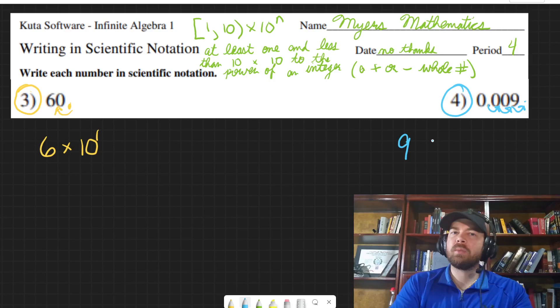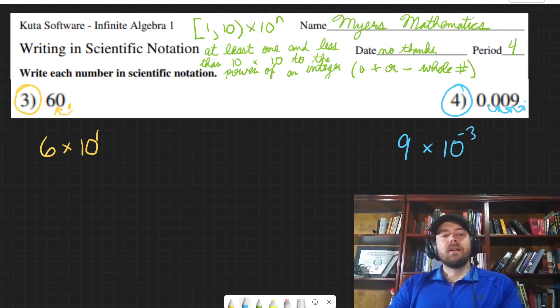So that's nine, which is a number between one and ten, times ten to the - that was one, two, three spaces - negative three.